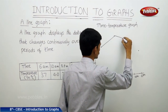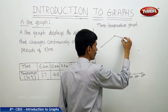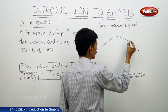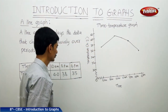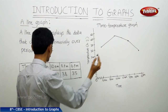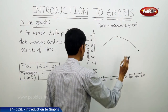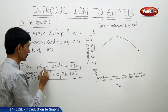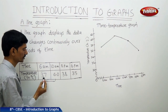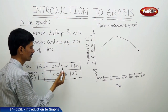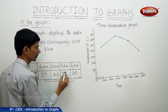This is also known as the time-temperature graph because we take time on the horizontal line and temperature on the vertical line. Observing the pattern: from 6 a.m. to 10 a.m. the temperature was increasing, from 37 to 40°C. Then from 10 a.m. to 6 p.m. it was decreasing — from 40 to 38, then 38 to 35.